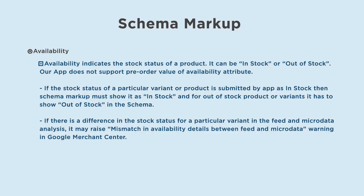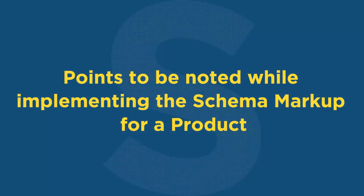Availability indicates the stock status of a product — it can be in stock or out of stock. Our app does not support the pre-order value of the availability attribute. If the stock status submitted by the app is in stock, then schema markup must show it is in stock, and for out-of-stock products or variants, it must show out of stock. If there is a difference in stock status between the feed and microdata analysis, it may raise a mismatch in availability details warning in Google Merchant Center.